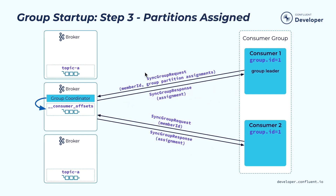Once the group leader has received the complete member list and its subscriptions, it will use its pluggable assigner to assign the topic partitions among those member instances. It will send the results in a separate request called sync group request to the group coordinator. Every other member will also be sending a similar request including its member ID. The group coordinator will take the data received from the group leader and send the assignment for each member back to each consumer instance.